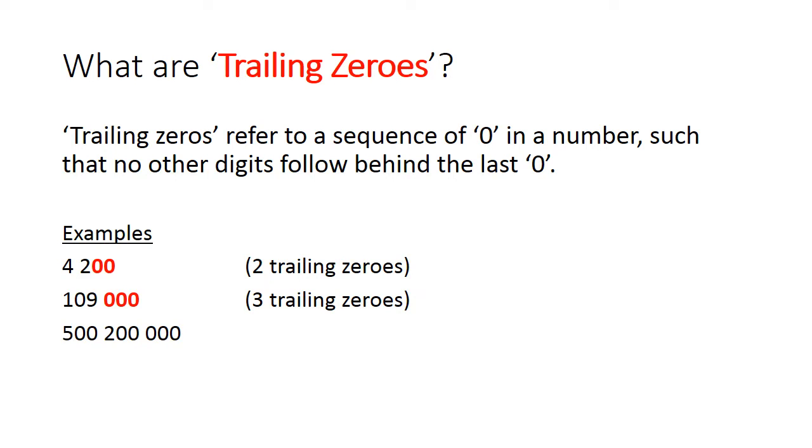Let's look at the number 500,200,000. How many trailing zeros are there? Let's pause and count the number of trailing zeros. Five trailing zeros is correct. The two extra zeros between five and two are not counted.